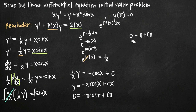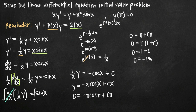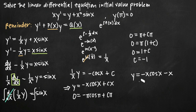We get 0 equals pi plus c times pi. Factoring out pi gives pi times 1 plus c. Dividing both sides by pi, we get 0 equals 1 plus c, and subtracting 1 from both sides gives c equals negative 1. Plugging this back into our equation for y, we get y equals negative x cosine of x, and since c is negative 1, minus x. Factoring out negative x gives y equals negative x times the quantity cosine of x plus 1. This is the solution to the linear differential equation with the given initial condition.